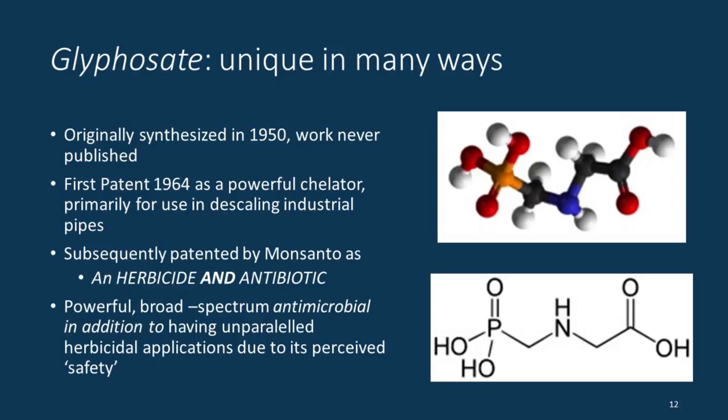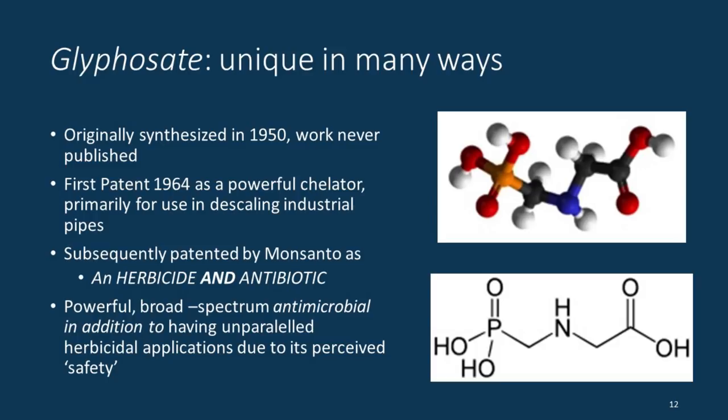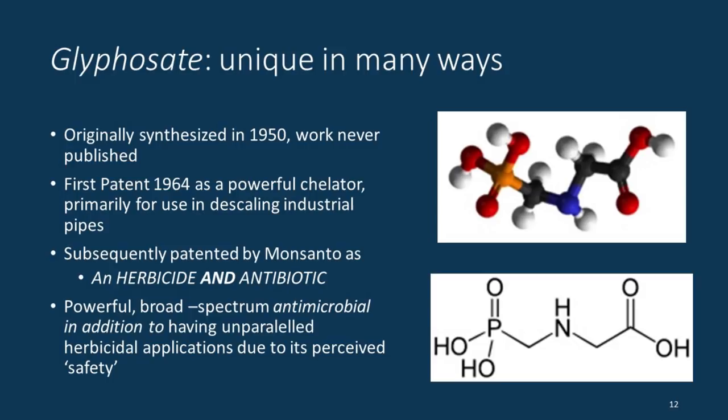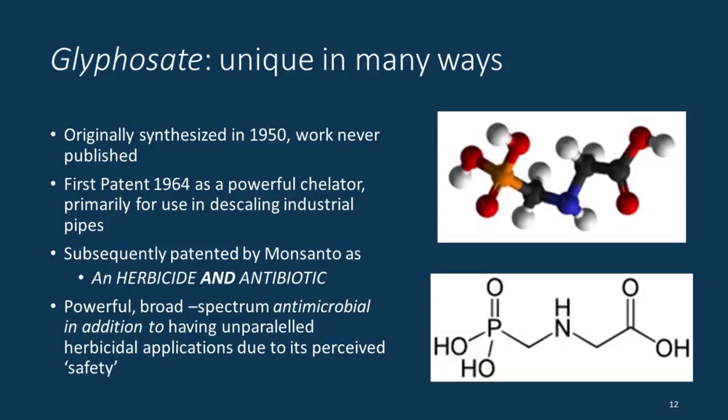Just to put that in perspective — a common household mineral chelator is Drano, used to clean pipes. But glyphosate was for use in industrial settings because it's very effective at cleaning industrial boilers and pipes of the scaling that happens — the accumulation of calcium and heavy metals over time.